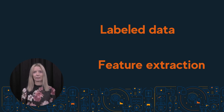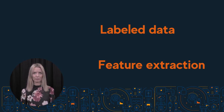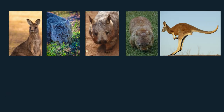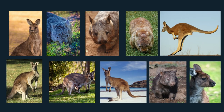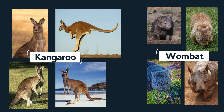Let's consider an example where we're wanting to teach a computer to recognise images of Australian mammals. We start by using lots of different images and types of mammals. Firstly, a human attaches a label to each image that identifies a mammal in it. For example, taking an image of a kangaroo, we label this as kangaroo and the other as wombat.